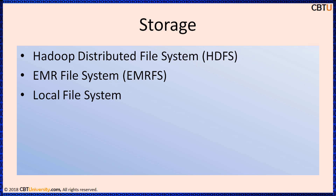Hadoop Distributed File System, HDFS, is a distributed scalable file system for Hadoop. HDFS distributes the data it stores across instances in the cluster, storing multiple copies of data on different instances to ensure that no data is lost if an individual instance fails. HDFS is ephemeral storage that is reclaimed when you terminate a cluster, and is useful for caching intermediate results during MapReduce processing or for workloads that have significant random I/O operations.